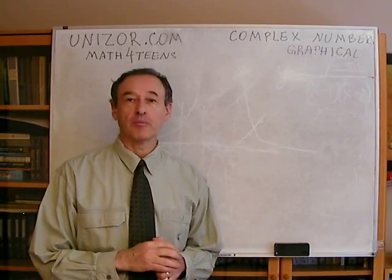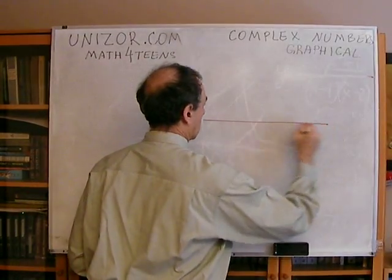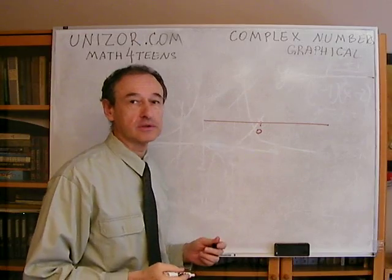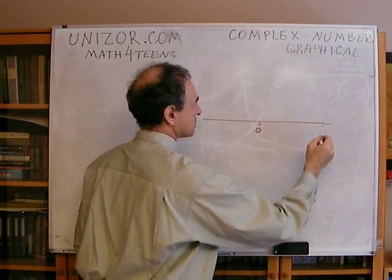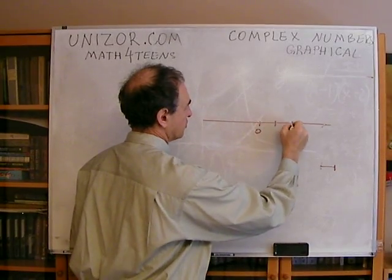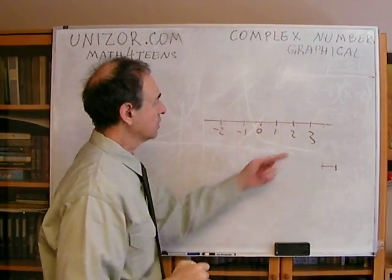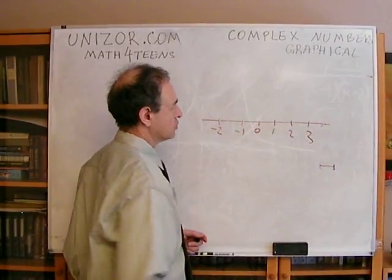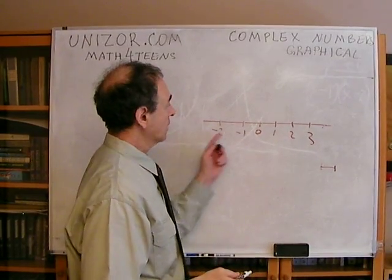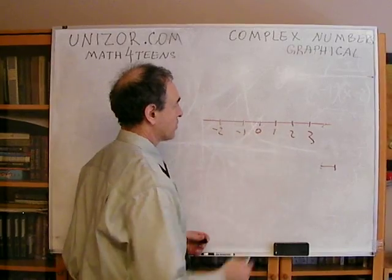We all know that real numbers can be graphically represented on a straight line with one particular point marked as equivalent to zero. There is a positive direction on the line, and with a unit length segment we can put marks 1, 2, 3, minus 1, minus 2, etc. to represent integers. Then we can divide each into fractions to represent rational numbers, and fill in between with irrational numbers to complete the whole line of real numbers.